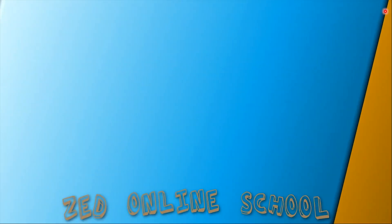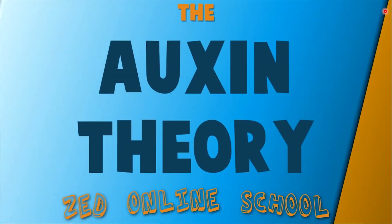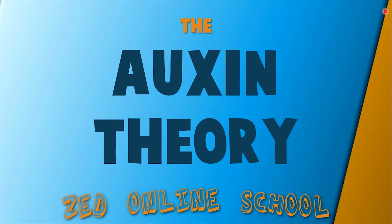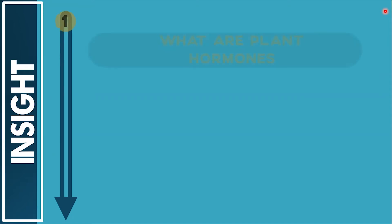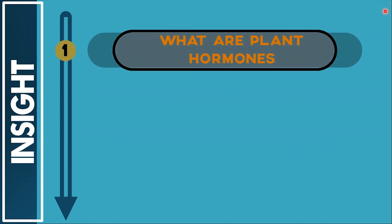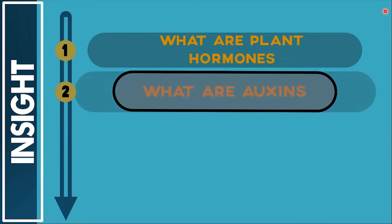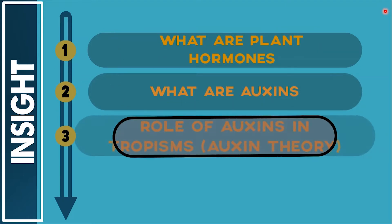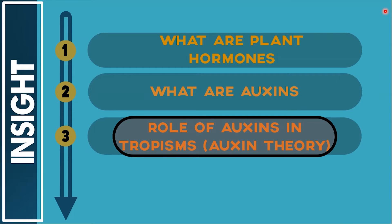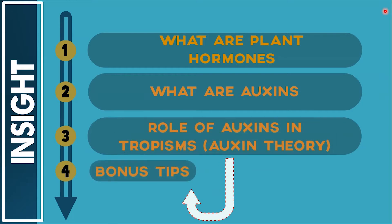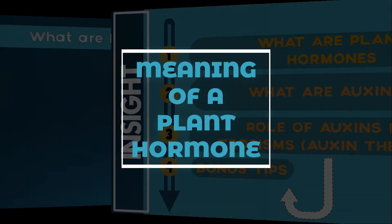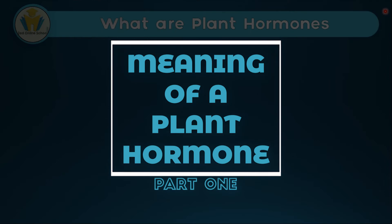This is Z Online School, and in this video we'll be looking at the auxin theory. We're going to do it in a systematic way, so by the end of this video you'll be able to know what plant hormones are, what auxins are, and the role of auxins in tropisms — simply what is named the auxin theory. At the end of this video we've got some bonus tips, so stay around till the end.